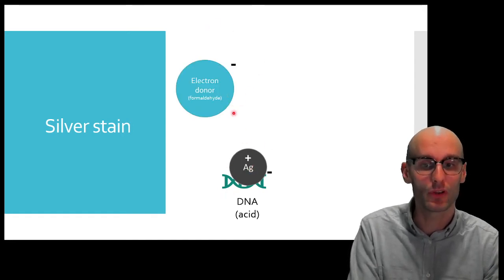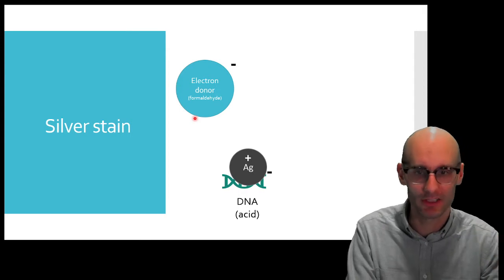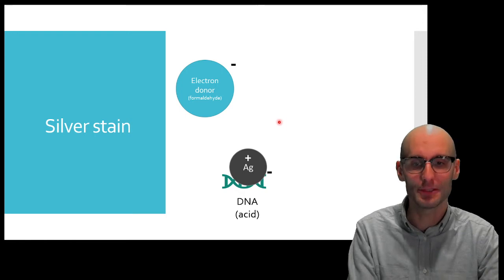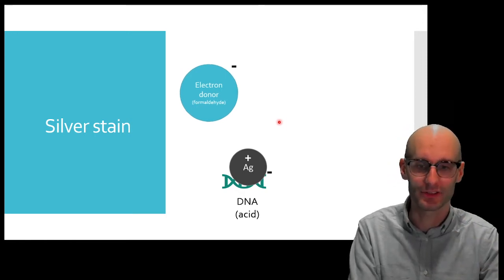So, what we need to do then next is after we've done the silver stain, we need to put an electron donor on. Now, formaldehyde is an example of this, but there's lots of other examples. So, something that will give away its electrons. It's called a reducing agent.